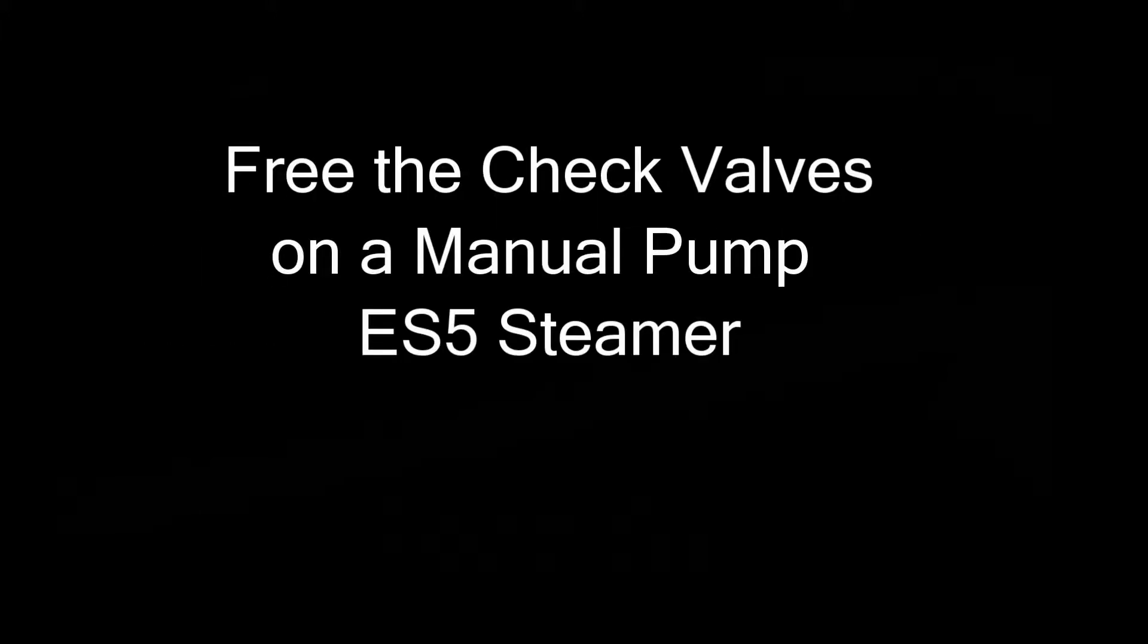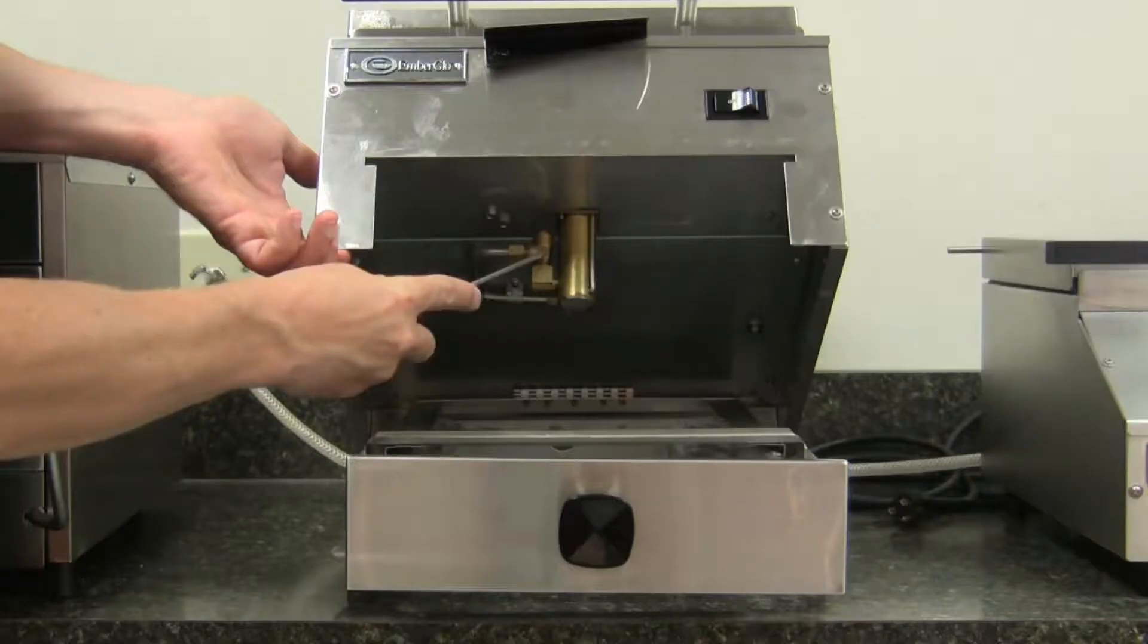Free the check valves on a manual pump. Sometimes, when a manual pump steamer hasn't been used for a while, the bearings inside the pump can become stuck from mineral deposits. When this happens, water can't get pumped to the generator.